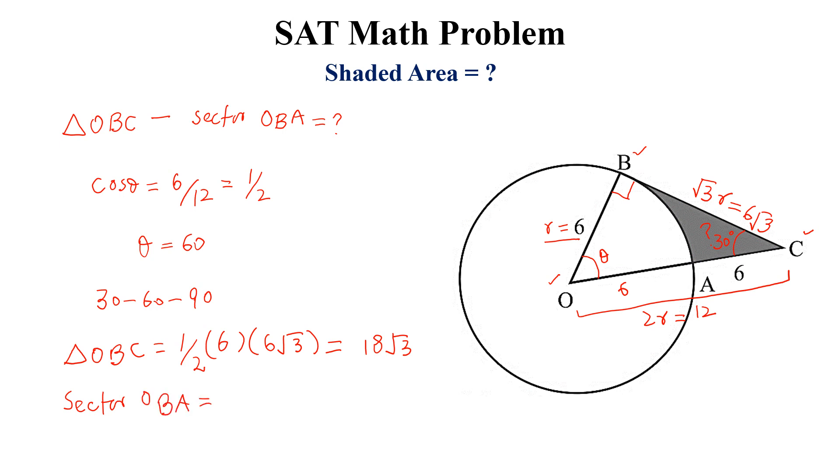The area of sector OBA is equal to r² theta, and r is 6, so 6 squared is 36, and theta is in radians: 60π divided by 360 degrees. So if we simplify this...